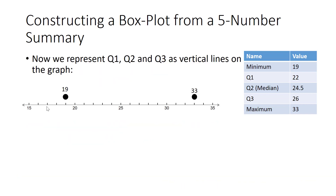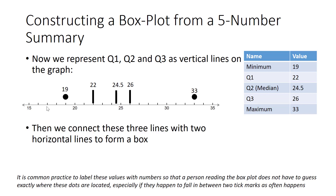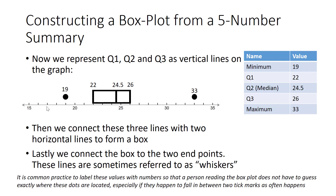Next, we represent Q1, Q2, and Q3 as vertical lines on the graph, and we label these three values so no one has to guess their exact positions. We then connect these three lines with two horizontal lines, forming a box. Finally, we connect our two dots to the box — these lines are sometimes referred to as whiskers. And that's it — we have our completed box plot.